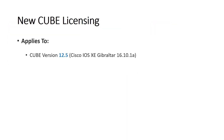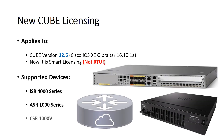Starting with Cube version 12.5, which runs on IOS XE 16.10.1a, all platforms must be registered with a customer's Cisco Smart Software Management Service account. So Cube licenses are not right-to-use licenses anymore. Cube 12 is supported on ISR 4000, ASR 1000, and Virtual Router CSR 1000V Series. ISR G2 and below series are not in the game anymore.